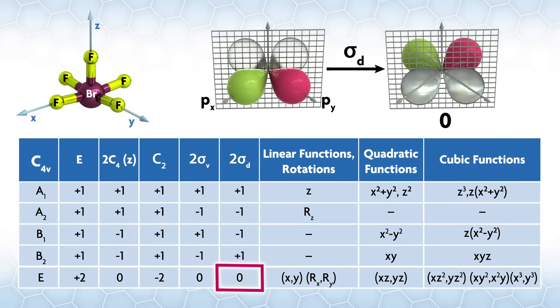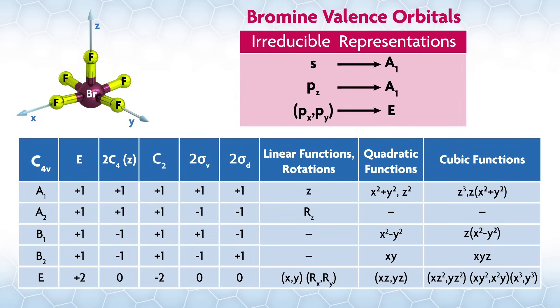The sigma d operations are between the axes, interconverting the orbitals. Since the orbitals move, the character is also zero. For the central atom, we have looked at the irreducible representations that correspond to the valence orbitals on bromine, which look like this.